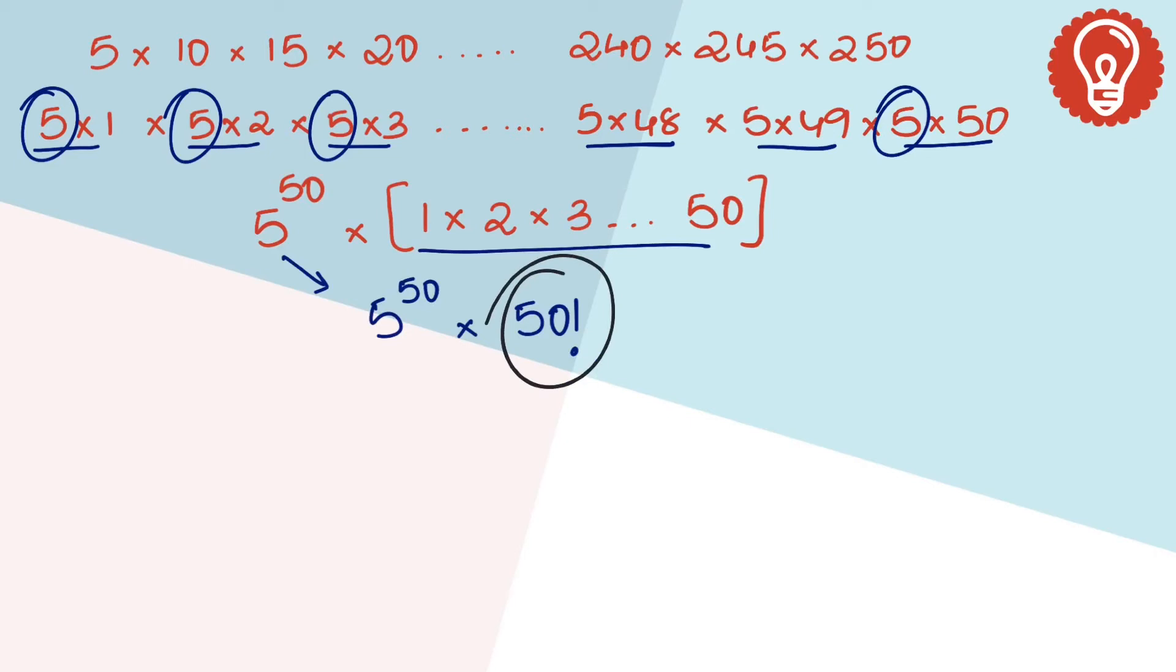Let's first find the number of 2s in 50 factorial. Now 50 when divided by 2 is 25, 25 divided by 2 is 12, 12 by 2 is 6, 6 by 2 is 3, 3 by 2 is 1. Sum of the quotients is 47.